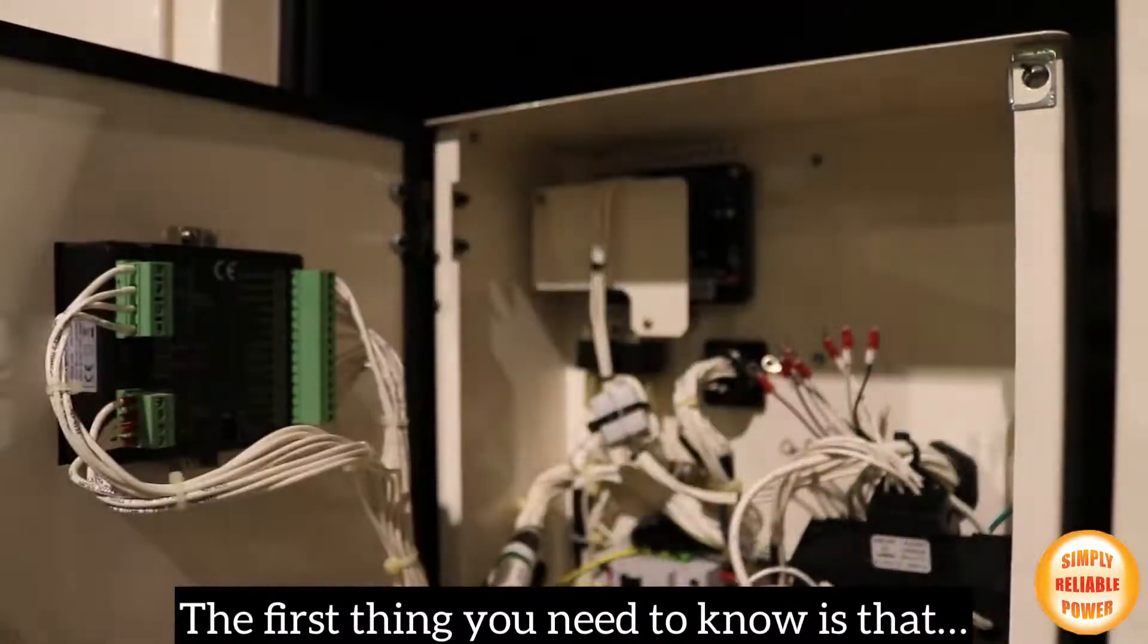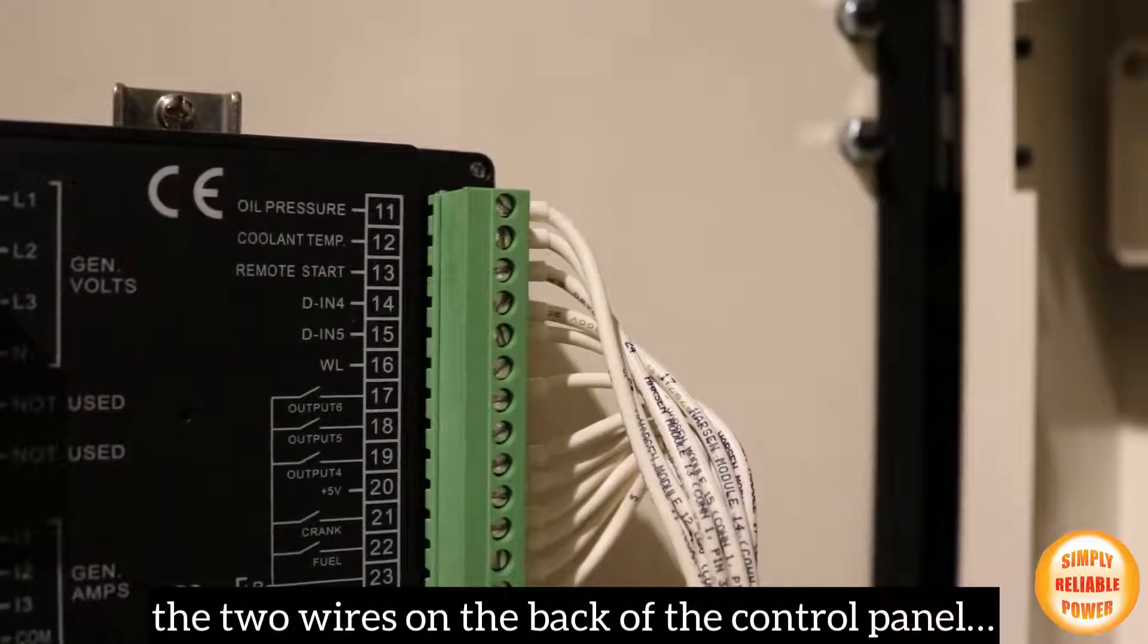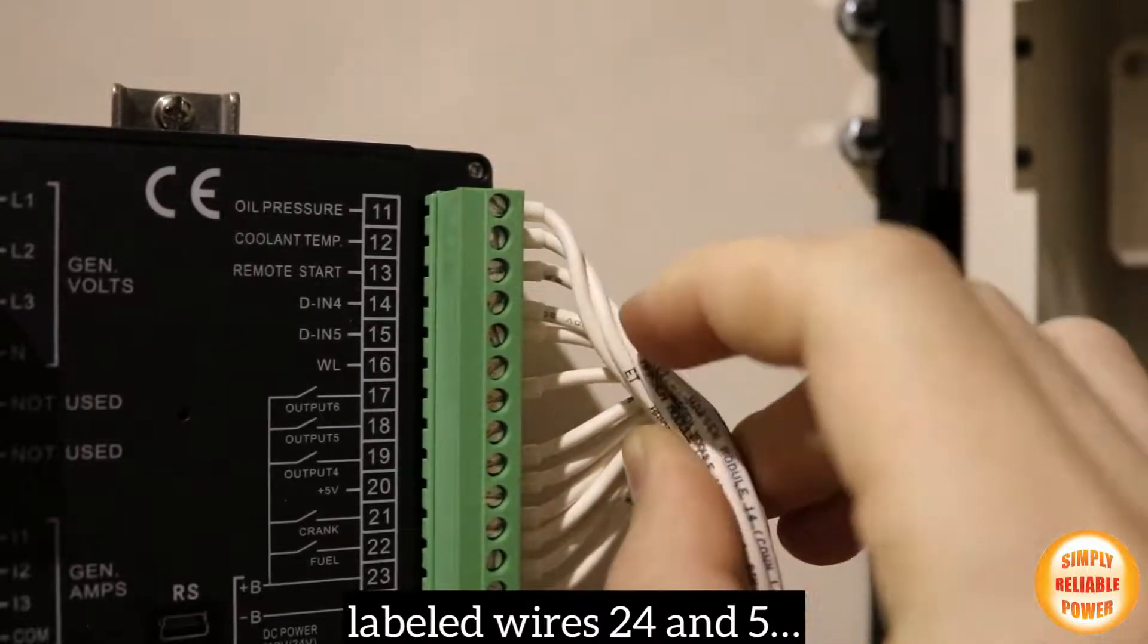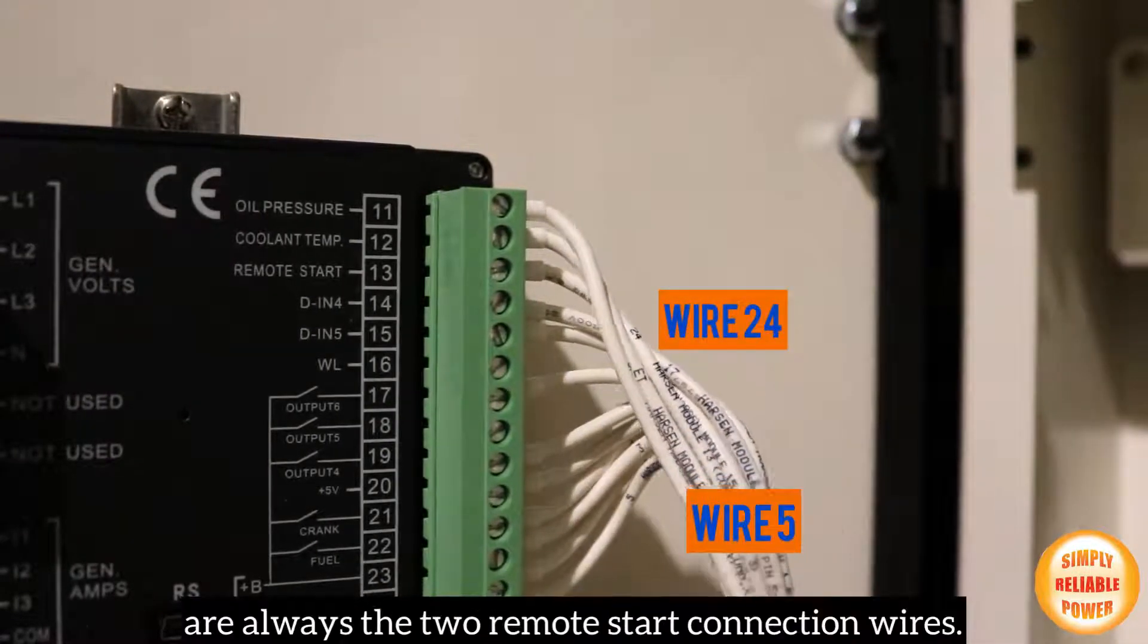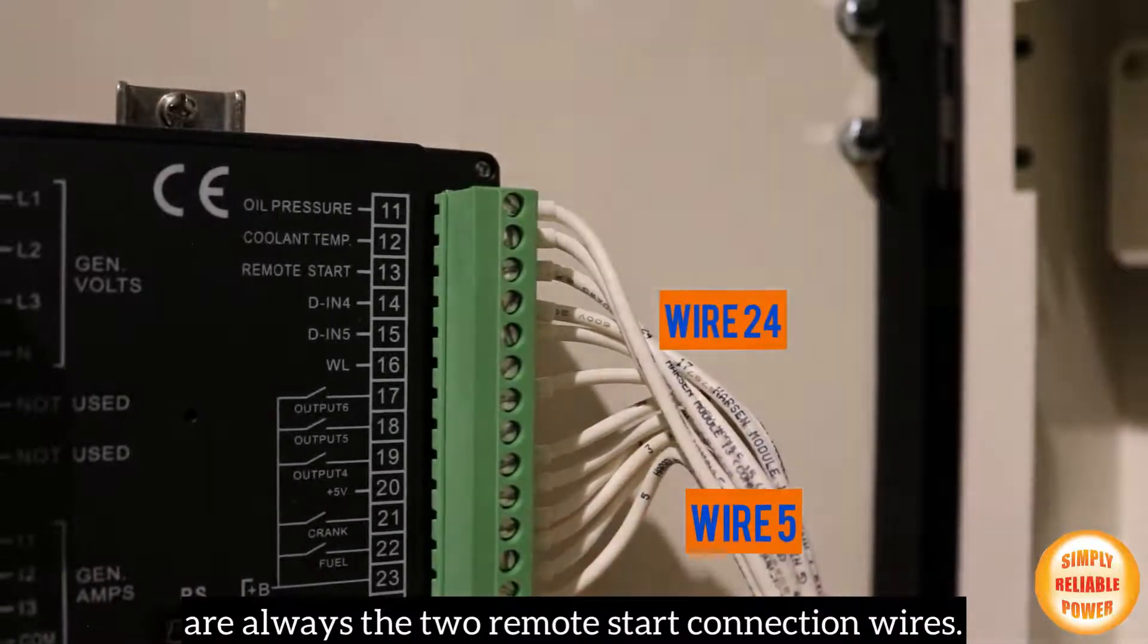The first thing you need to know is that the two wires on the back of the control panel labeled wires 24 and 5 are always the two remote start connection wires.